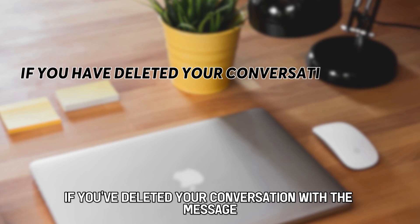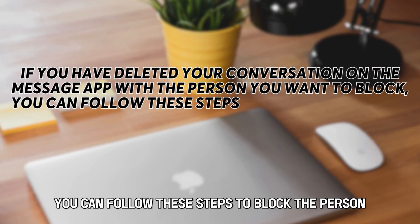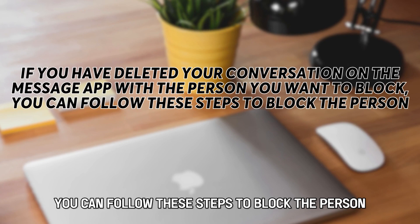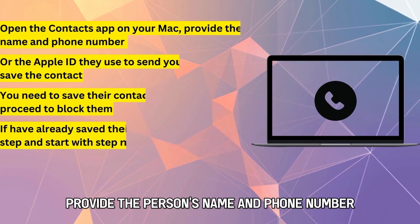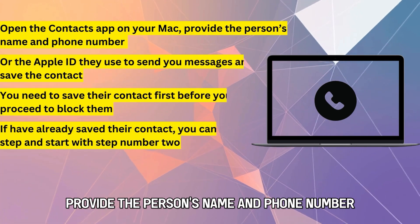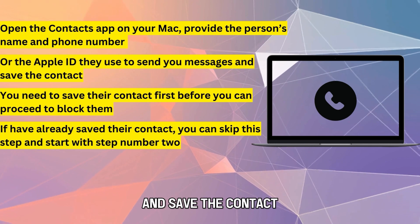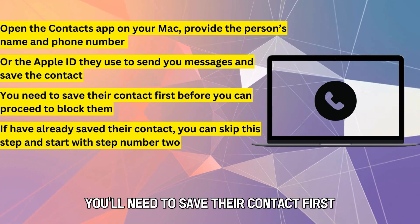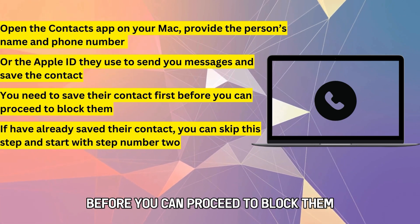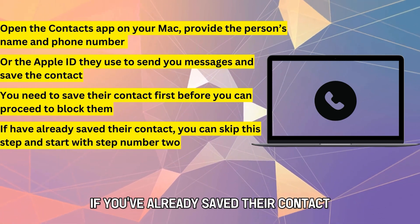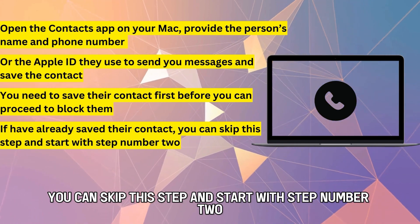Alternatively, if you've deleted your conversation in the Message app with the person you want to block, you can follow these steps to block the person. Open the Contacts app on your Mac. Provide the person's name and phone number or the Apple ID they use to send you messages, and save the contact. You'll need to save their contact first before you can proceed to block them. If you've already saved their contact, you can skip this step and start with step number two.